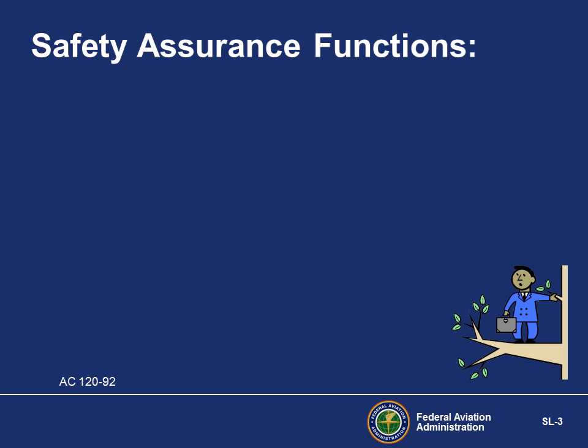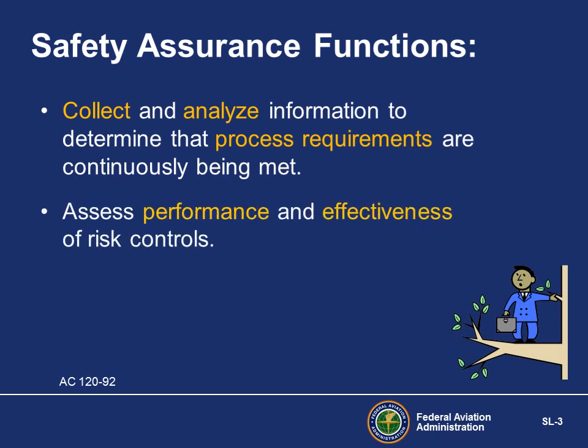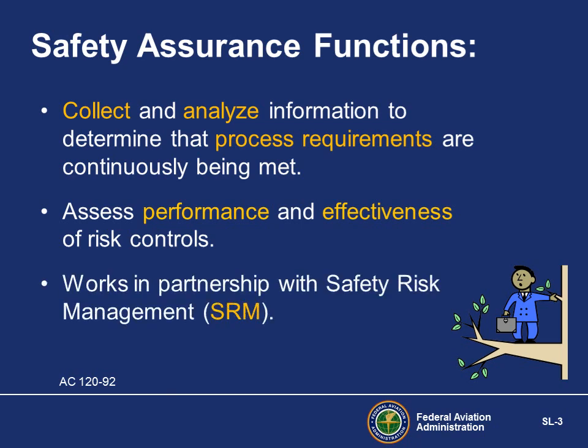Fundamentally, there are three safety assurance functions: collecting and analyzing information to determine that process requirements are continuously being met, assessing the performance and effectiveness of risk controls, and working hand-in-hand with safety risk management. Analyzing process requirements asks, how are we doing it? Assessing effectiveness asks, is it working as we intended?